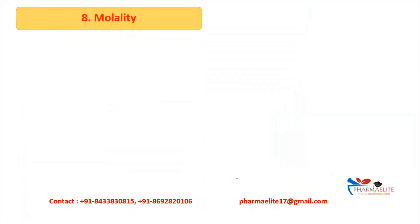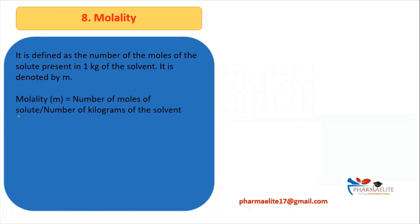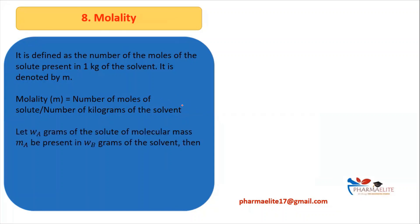The next term is molality. Molality is defined as the number of moles of solute present in 1 kg of solvent, and it is denoted by small m. The formula for molality is number of moles of solute / number of kilograms of solvent. One important thing to remember: in the denominator we have solvent, not solution — students usually go wrong here, so please remember.